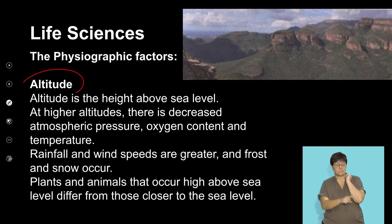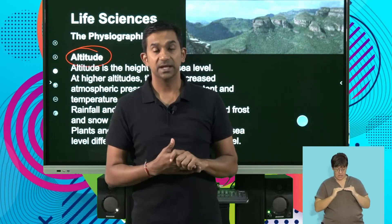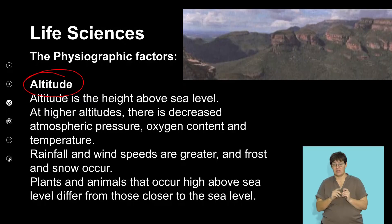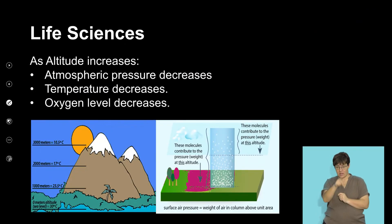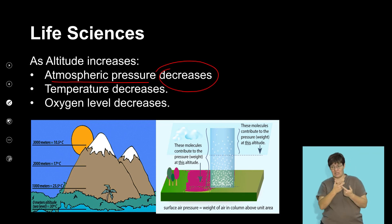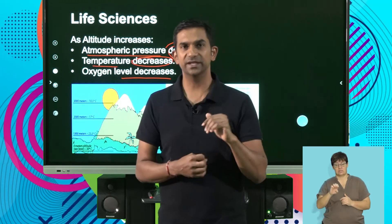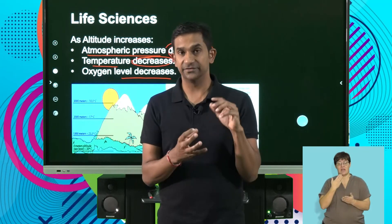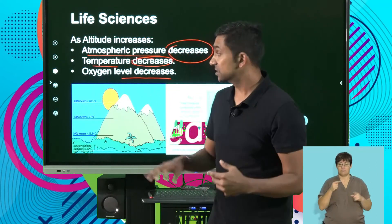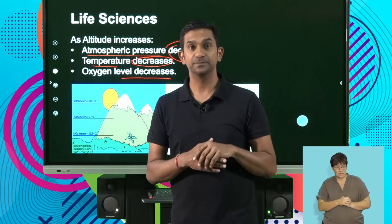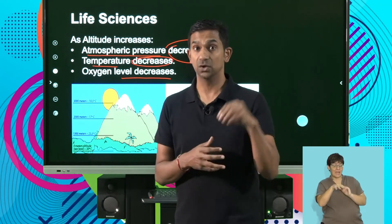The last factor is altitude — the height above sea level. As altitude changes, it affects atmospheric pressure, which decreases, as does the temperature and oxygen levels. As altitude increases, it's going to affect the availability of oxygen, it's going to be much cooler, and atmospheric pressure will be greater. In turn, all other living organisms inhabiting these areas will be affected.